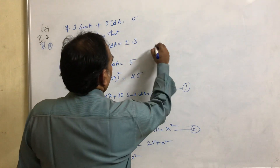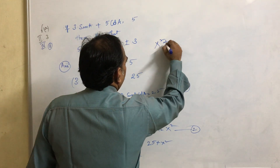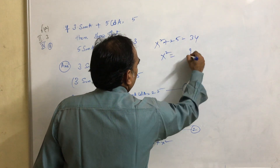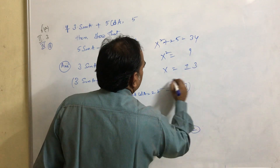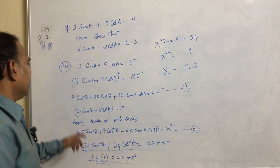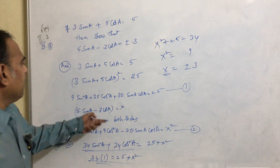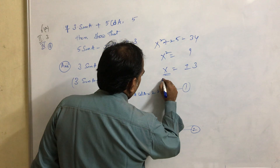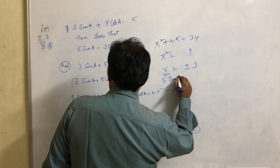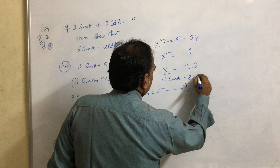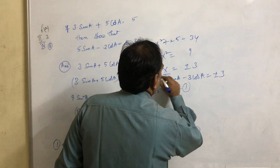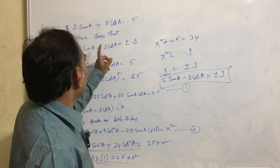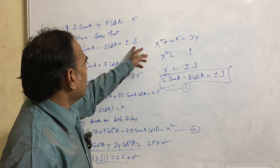From this, X² plus 25 equals 34, so X² equals 9, and X equals plus or minus 3. We assumed that 5sinA minus 3cosA equals X, so 5sinA minus 3cosA equals plus or minus 3. We are able to show that 5sinA minus 3cosA equals plus or minus 3.